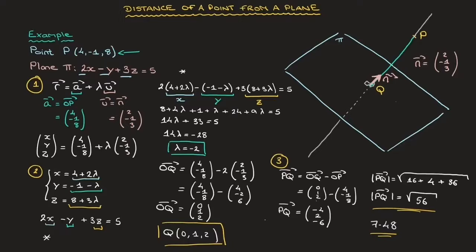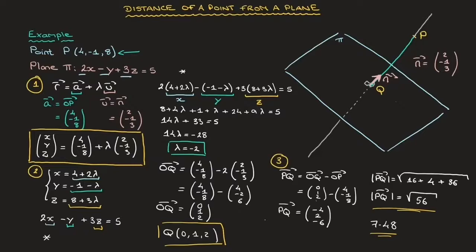And there we have it — we now know how to calculate the distance of a point from a plane. These three steps will always work: Step 1, find the equation of the line through the given point and its perpendicular projection Q onto the plane; Step 2, find the coordinates of the intersection of that line with the plane; and Step 3, calculate the distance as the magnitude of vector PQ. Do make a note of these steps, as they will come in handy when studying 3D lines and planes.